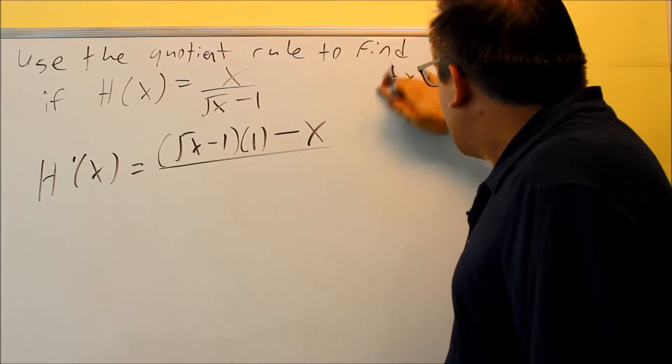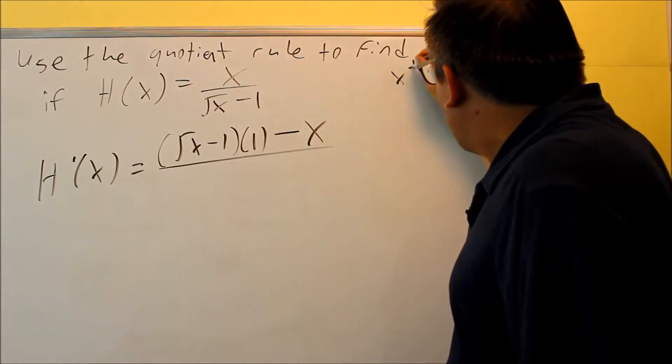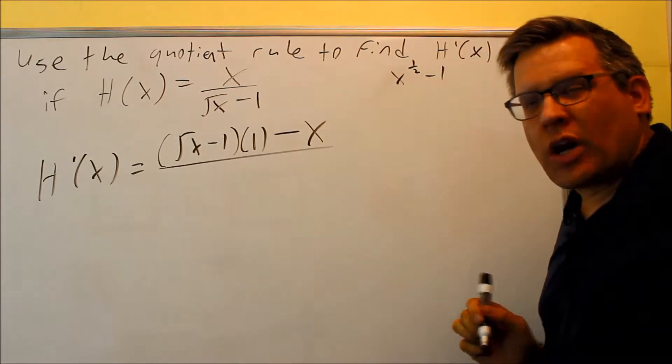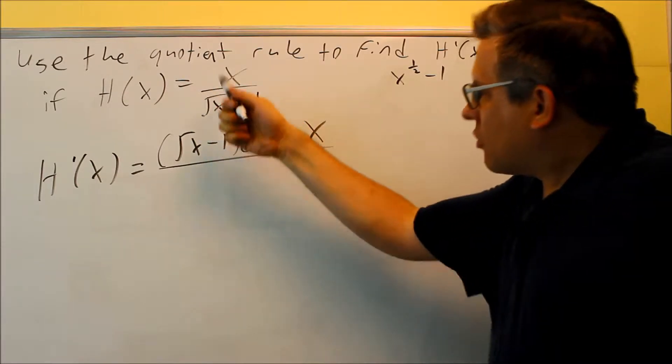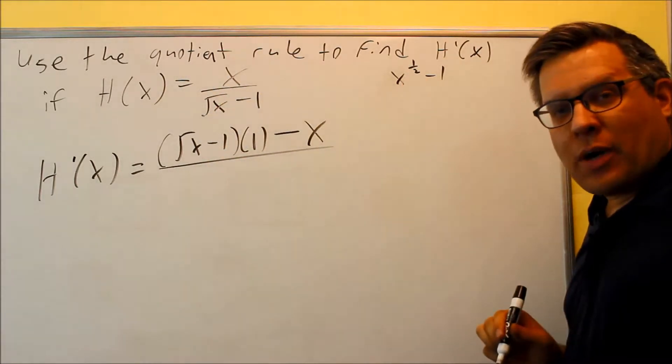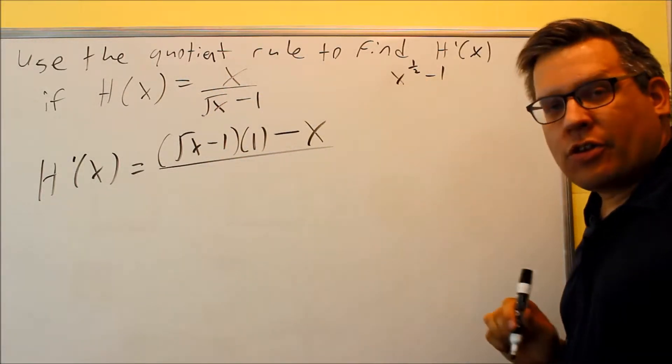Now the bottom one, we can write that as x to the 1 half power minus 1. So we'll write it that way. Again, the square root can always be written as a 1 half power. So when we do that, we'll apply the power rule.